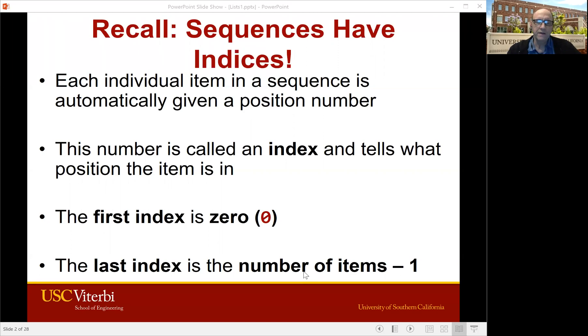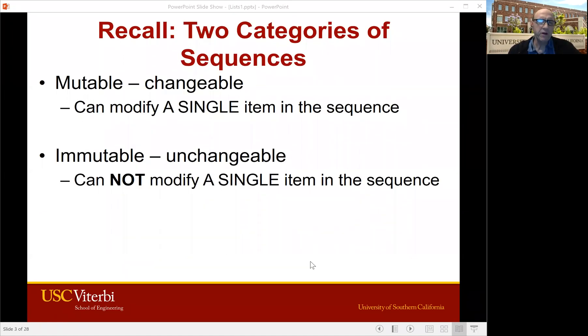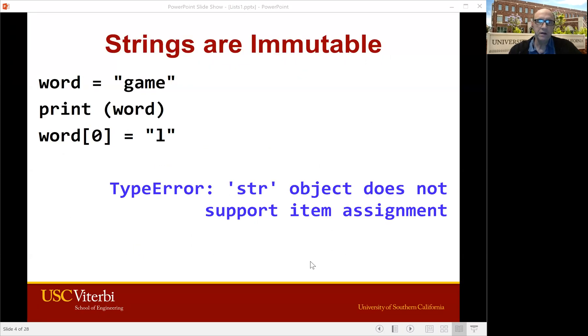We can talk about the item at index 0, the item at index 1, from the beginning all the way to the last item which is the number of items minus 1. And before we said that there's two kinds of sequences: mutable or changeable and immutable. And of course strings are of the latter kind, immutable, you cannot change them.